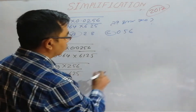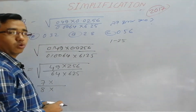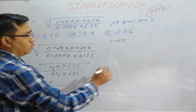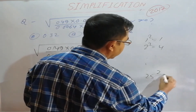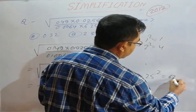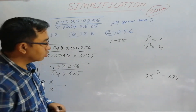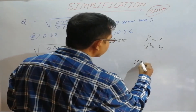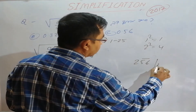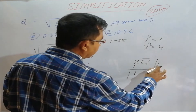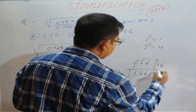256 and 625 are also perfect squares. The square root of 256 is 16, the square root of 625 is 25, and the square root of 64 is 8. So we compute 7 × 16 divided by 8 × 25.